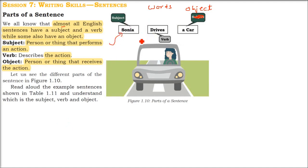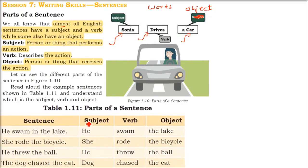Subject is a person or a thing that performs an action. Verb is the action. An object is a person or a thing that receives the action. Now let us take some examples and try to find out the subject, verb, and object.